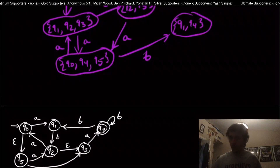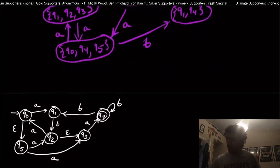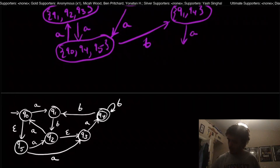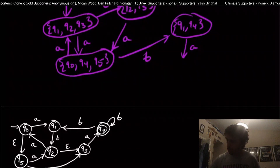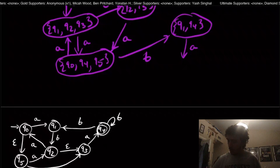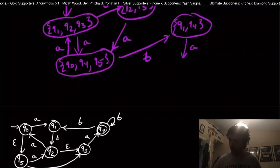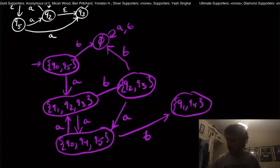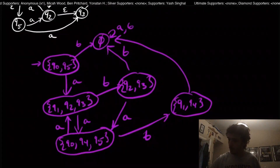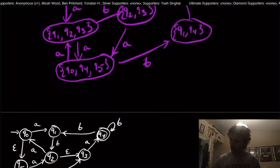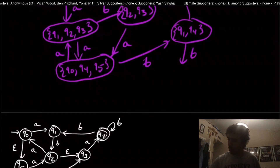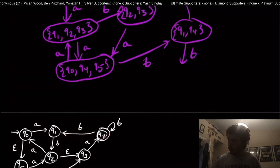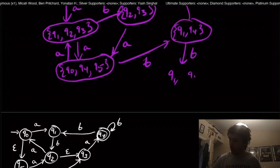Now for state {q1, q4}: on input A, q4 goes nowhere and q1 goes nowhere on A either. So on input A, this goes to the dead state. On input B, q1 goes to itself — so we have q1 — and q4 goes to itself.